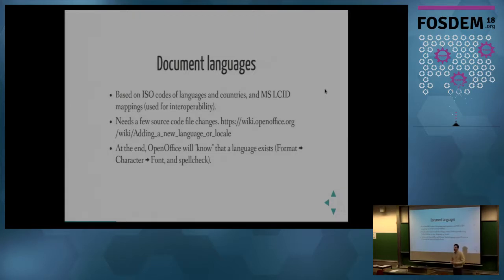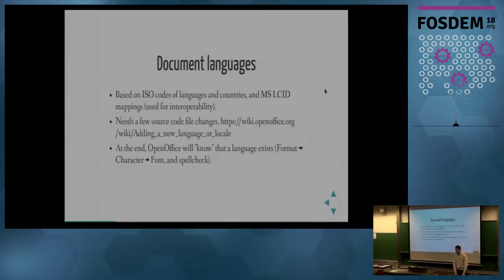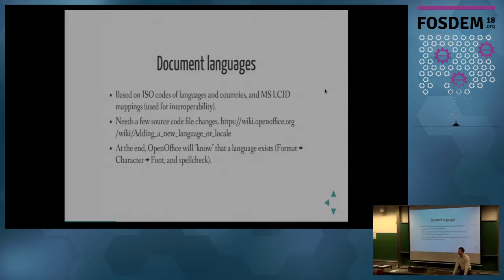Not real standards — for Microsoft Office compatibility, we sometimes have to consider the Microsoft mapping of languages as an internal standard for better interoperability, and the same applies for adding new languages that can work the same way between OpenOffice and LibreOffice. This entails a bit of paperwork. It's rare that a volunteer is well-prepared about this, but this is the first basic step, with a few source code file changes, and at the end OpenOffice knows that a language exists.